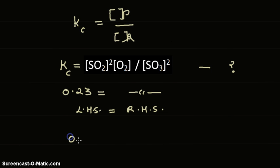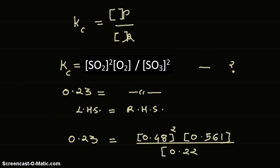Let's substitute the values: 0.23 equals the concentration of sulfur dioxide squared, then concentration of oxygen 0.561, divided by concentration of sulfur trioxide squared because we have two molecules of SO₃.